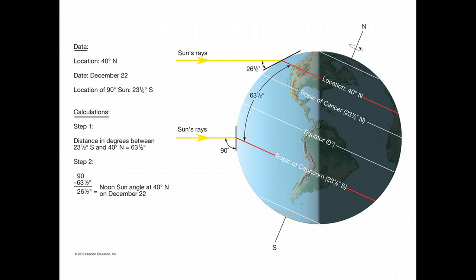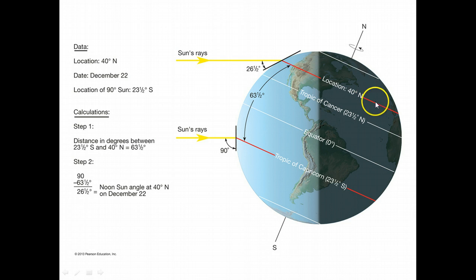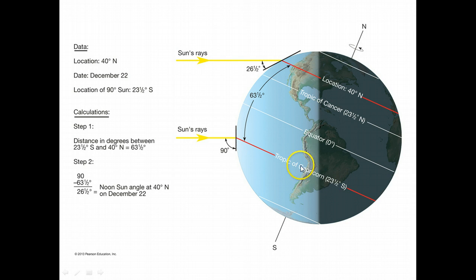We can actually calculate what the sun's angle will be above the horizon for any latitude on Earth for any day. For example, let's say you want to know the height of the sun above the horizon — the sun angle — for 40 degrees north latitude, somewhere like Connecticut, on December 22nd, the winter solstice. We know the latitude is 40 degrees north, and on the winter solstice the sun's vertical rays are right on the Tropic of Capricorn at 23.5 degrees south latitude.